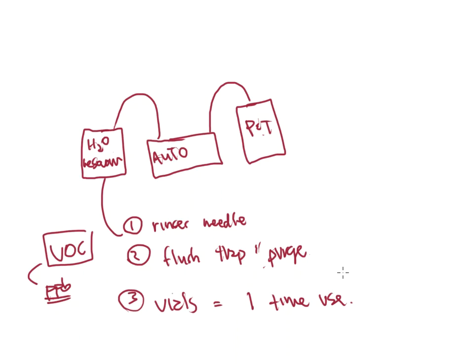The vials used for purge and trap are typically one-time use. Once you put sample in them, you've contaminated that glass vial and it will have volatile organics in it for quite some time unless you clean them very thoroughly. If vials are going to be reused, they need a complete washing by hand and then are normally put in a sonicator device, which loosens any volatiles still present, getting them out of the nooks, crannies, and etchings in the glass so they dissolve into the solvent. This whole cleaning process is very strict.